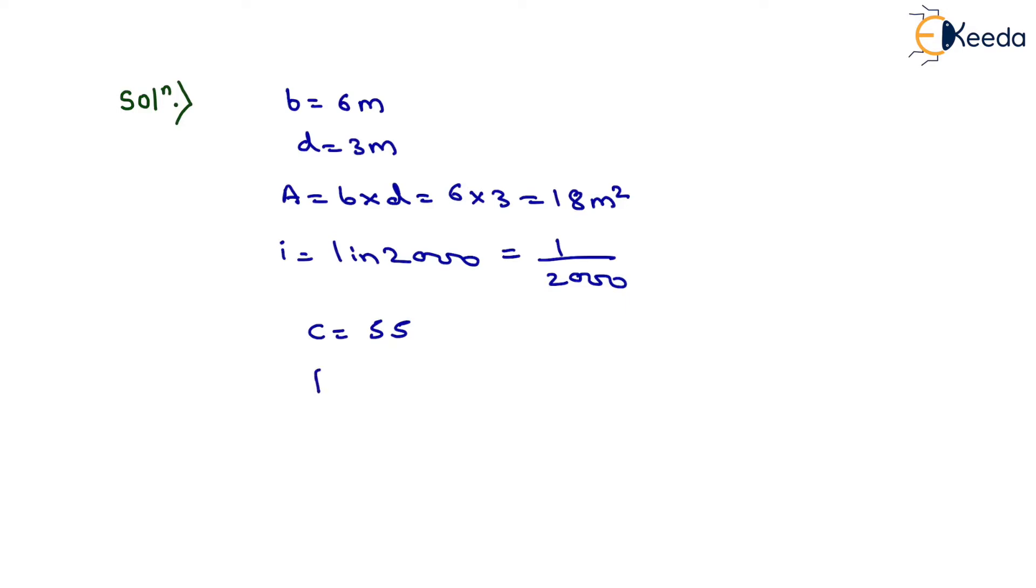Now perimeter P will be equals to B plus 2D. Therefore B is given as 6 meters and D is given as 3 meters. On solving this, we will have perimeter equals to 12 meters.